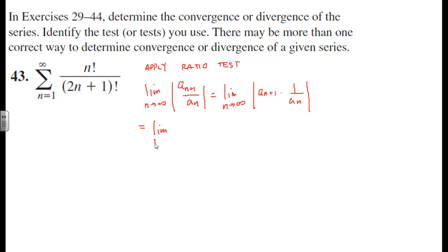So limit as n approaches infinity of the n plus one term, which is n plus one factorial all over two times n plus one plus one factorial. And then the reciprocal of the nth term is going to be two n plus one factorial all over n factorial.